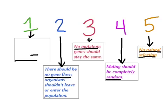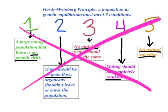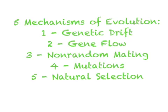According to the Hardy-Weinberg principle, a population in genetic equilibrium must meet five conditions: (1) there must be a population large enough that there is no genetic drift; (2) there should be no gene flow, meaning individuals should not leave or enter the population; (3) there should be no mutation, meaning DNA stays exactly the same; (4) mating must be completely random; and (5) there must be no natural selection. If a population is not in genetic equilibrium, then at least one of these five conditions has been violated. The violations of the five conditions are called the mechanisms of evolution.